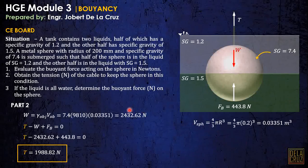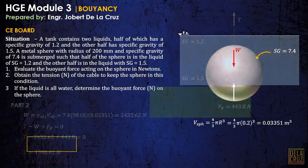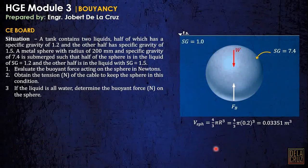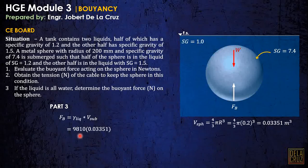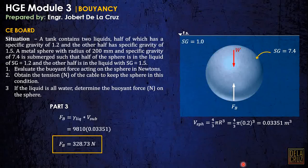For number 3, if the liquid is all water, determine the buoyant force in newtons on the sphere. This is simpler: replace everything with water. Fb = gamma of water times the volume submerged, which is the total volume of the sphere. Substituting gamma of water as 9810 N/m³ times the full sphere volume gives the answer. Note that this is a CE board exam problem.